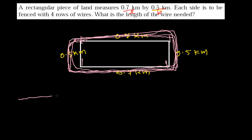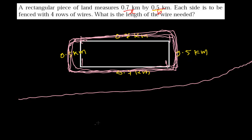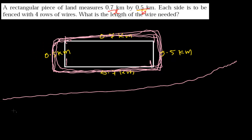So the wire needed will be very long. I need to calculate that length. The wire has a starting point and ending point that can fence this whole rectangular piece of land four times.